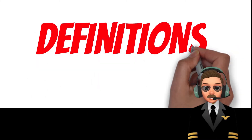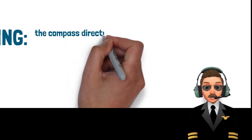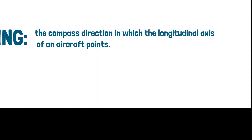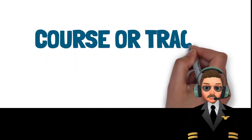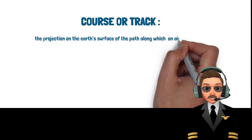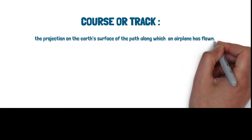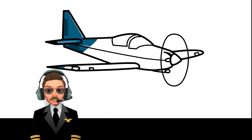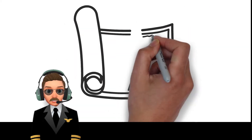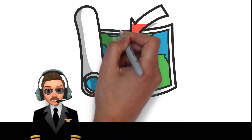What is the difference between heading and track? The definition of heading is the compass direction in which the longitudinal axis of an aircraft points. The definition of track or course is the projection on the Earth's surface of the path along which an airplane has flown.